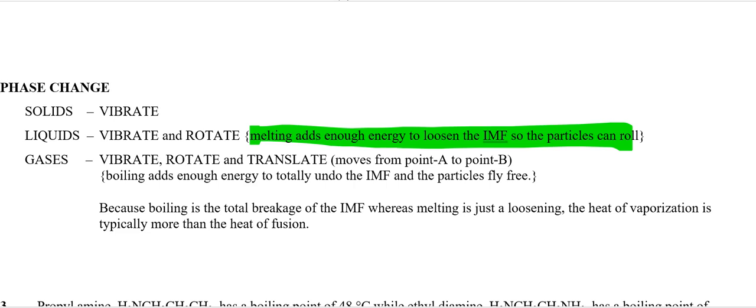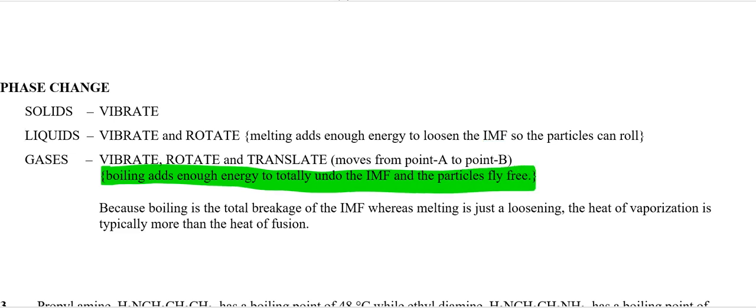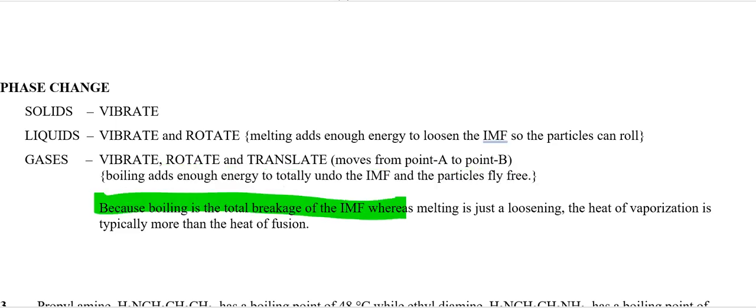Gases, on the other hand, gases translate from point A to point B. The boiling, you have to undo the IMF and the particles fly free. For the ball pit analogy, you would actually have to get in there, take the ball out of the pit, and chuck it out of the pit. That's a gas. They're flying around, not touching each other anymore. Because they're flying around, boiling is a total breakage. So the heat to actually break it is going to be more heat than just to loosen it. So that's why the heat of vaporization is typically more than a heat of fusion. Later on, we study thermodynamics. We can actually get into that in greater detail, but it should make sense. To loosen something is one thing, but to totally separate them and pull them completely apart, that's something else altogether.